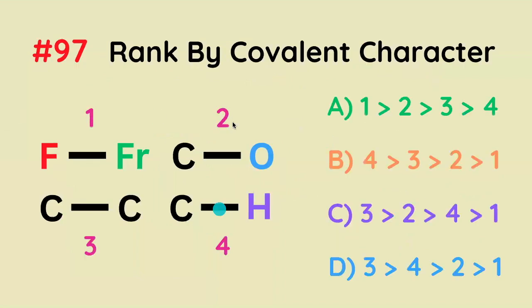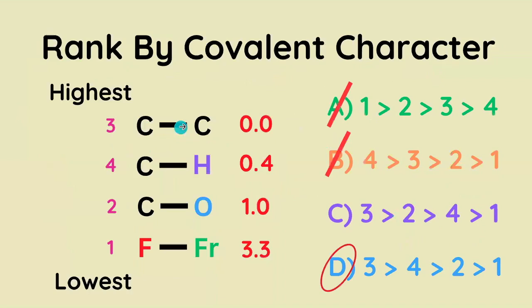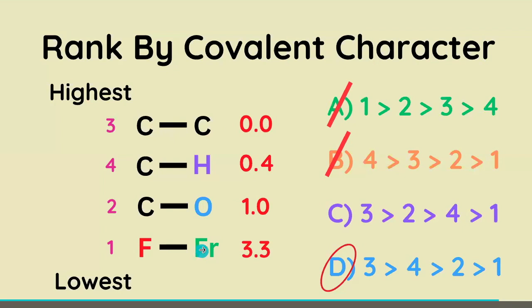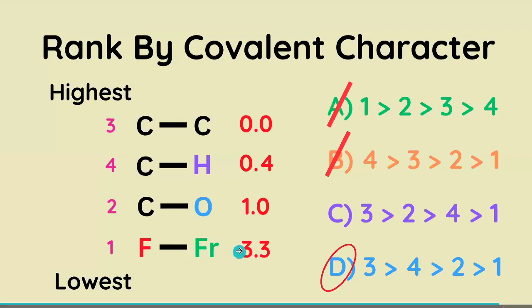Rank these bonds by their covalent character. A C–C bond has the highest covalent character, because it has an electronegativity difference of 0. The Fr–F bond has the largest electronegativity difference, and then they just rank in order.